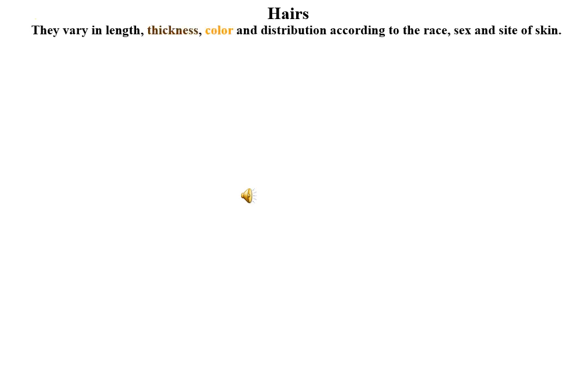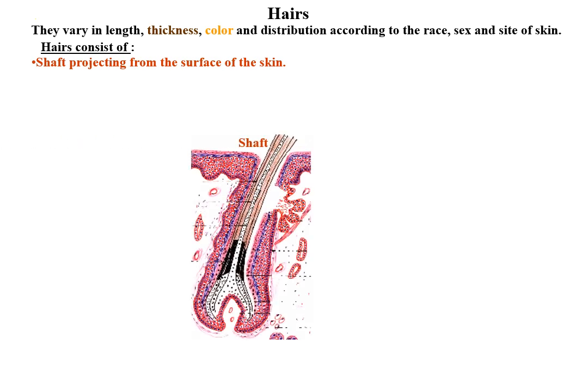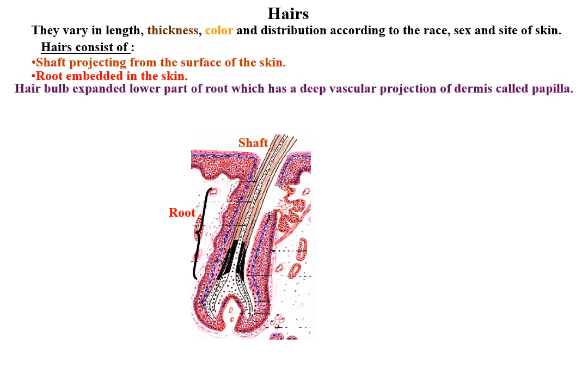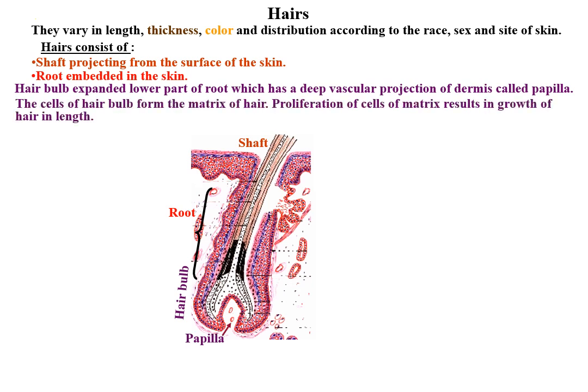Hairs vary in length, thickness, color, and distribution according to race, sex, and the site of the skin. Hairs consist of a shaft projecting from the surface of the skin, a root embedded in the skin, and a hair bulb — the expanded lower part of the root — which has a deep vascular projection of the dermis called the papilla. The cells of the hair bulb form the matrix of the hair. Proliferation of cells of the matrix results in growth of hair in length.